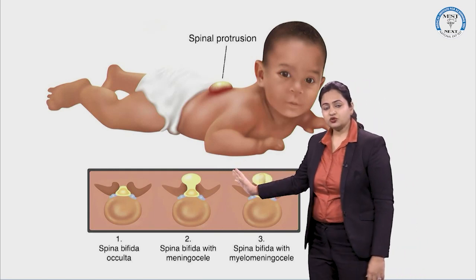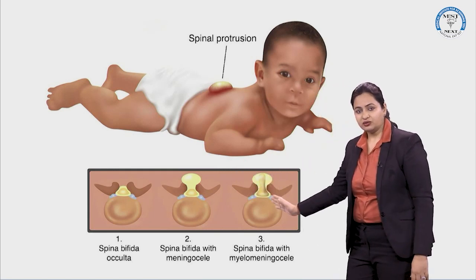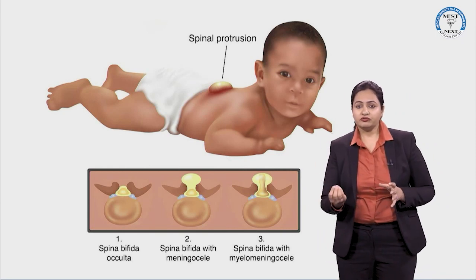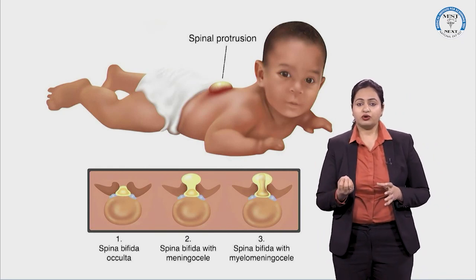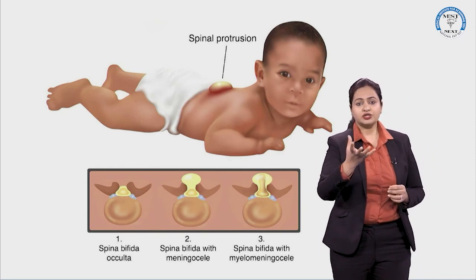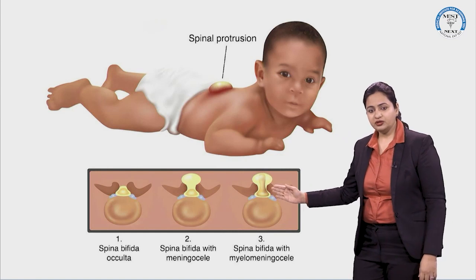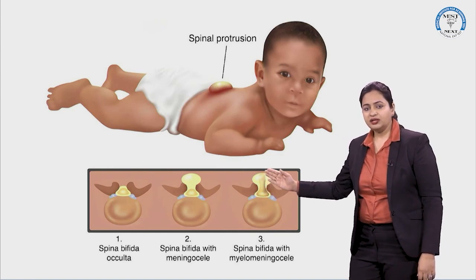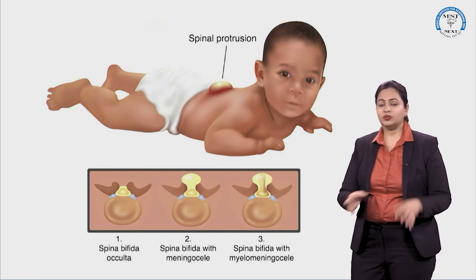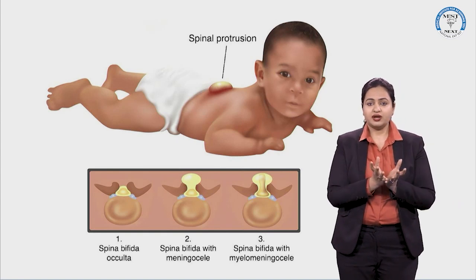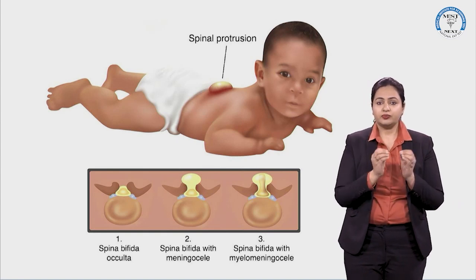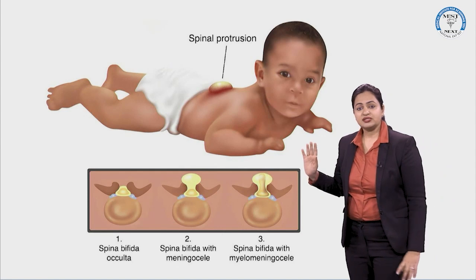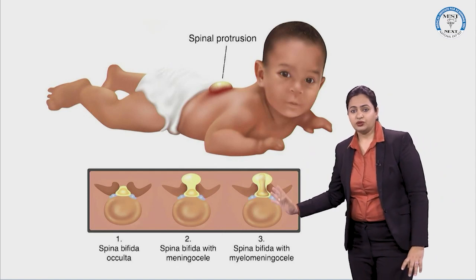In myelomeningocele, some component of the spinal cord or nerves also come out through the defect. The spinal cord is also present within the cystic sac, which is why this condition is termed myelomeningocele.